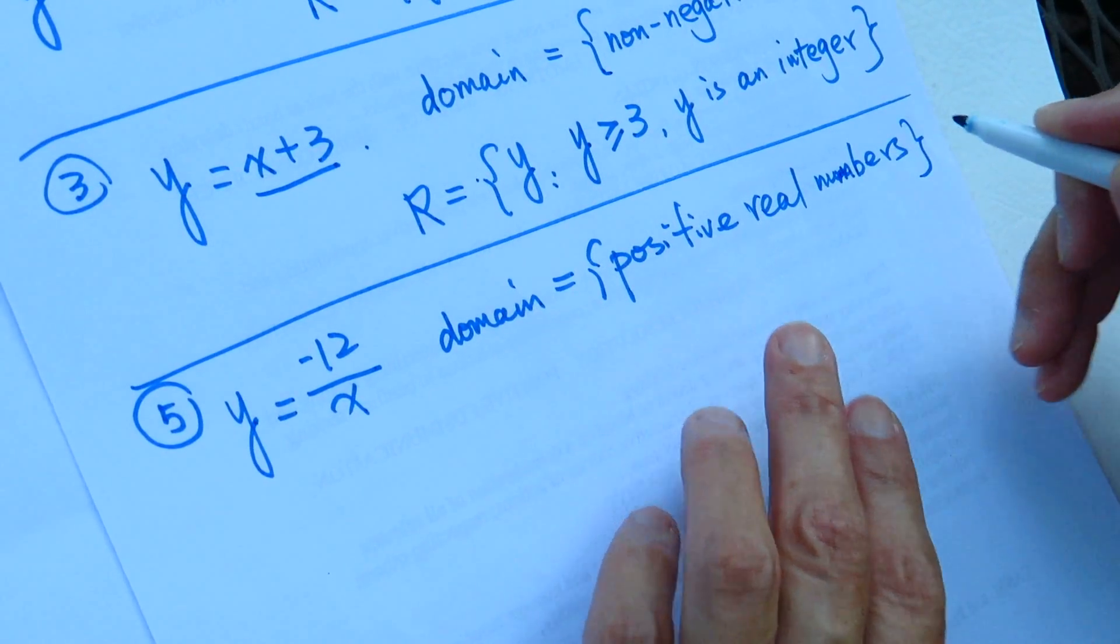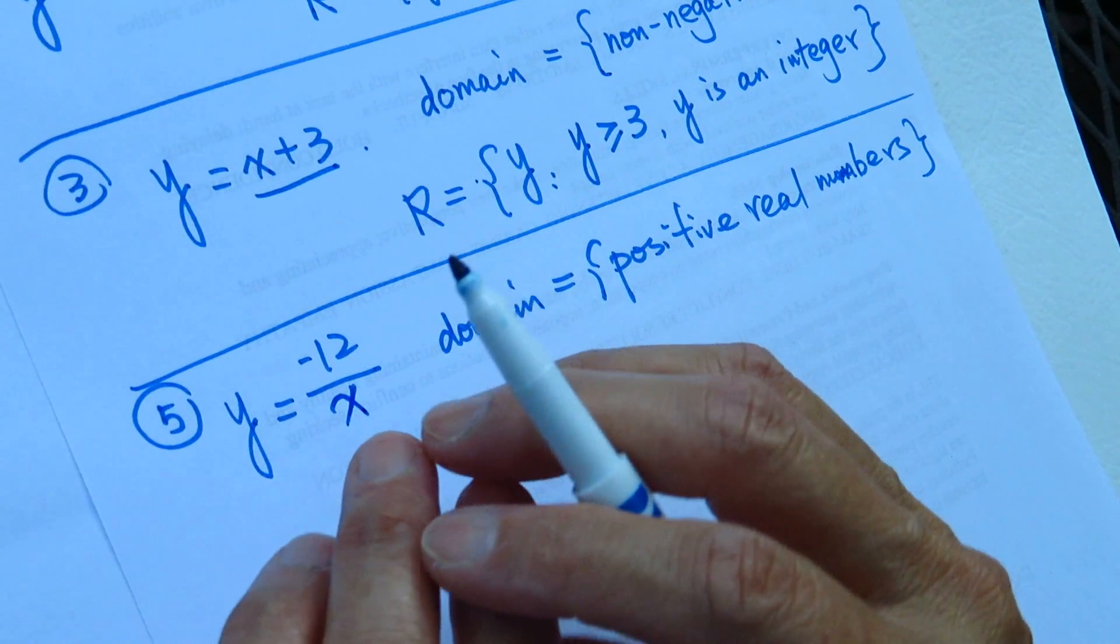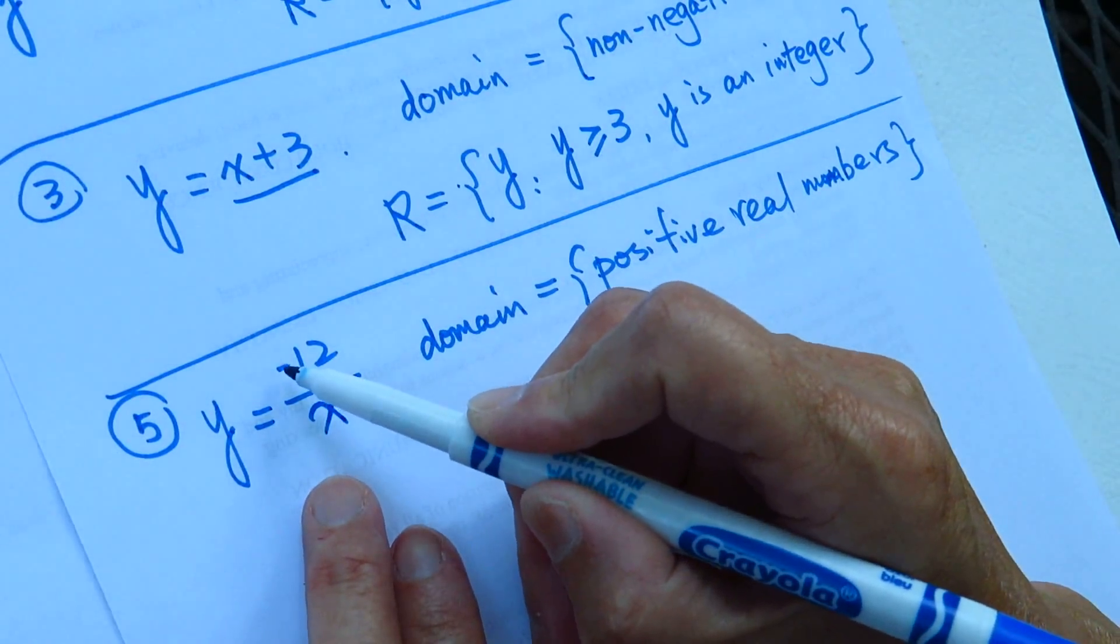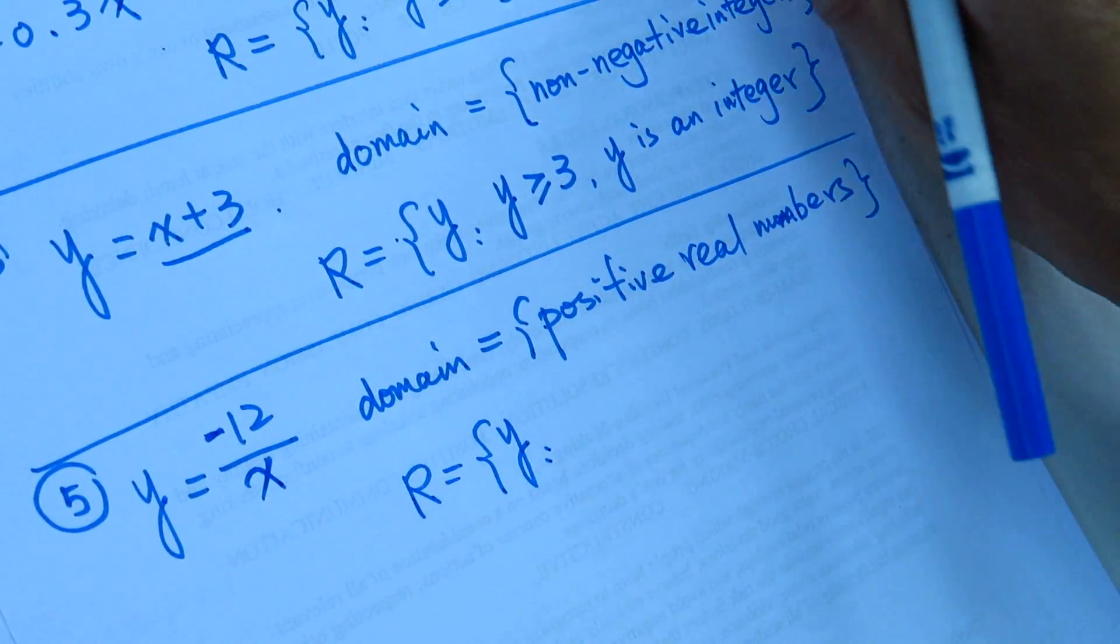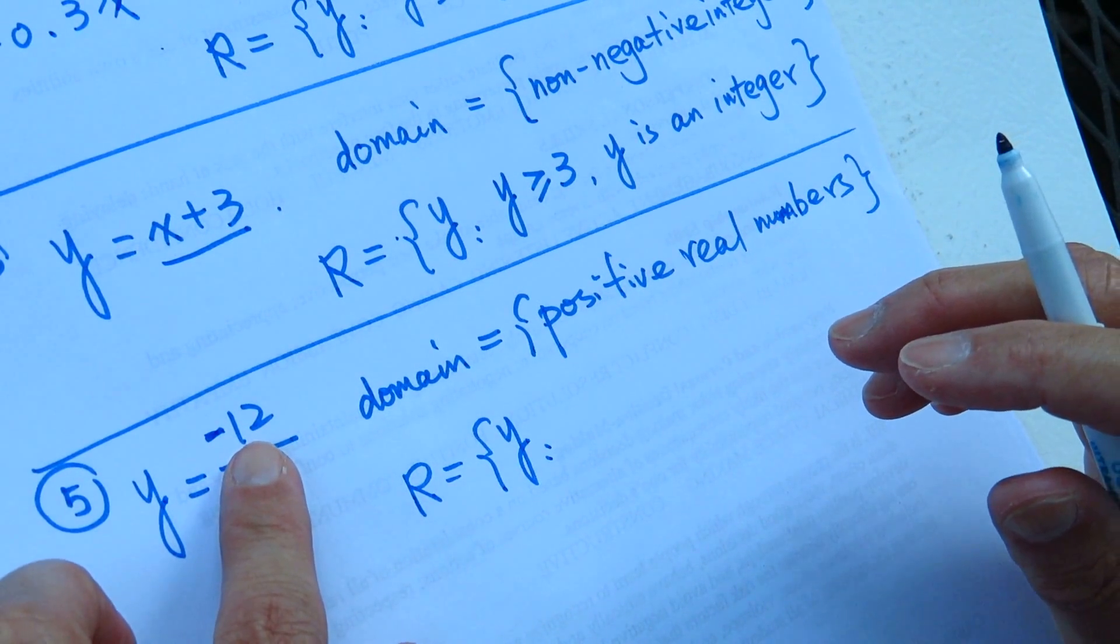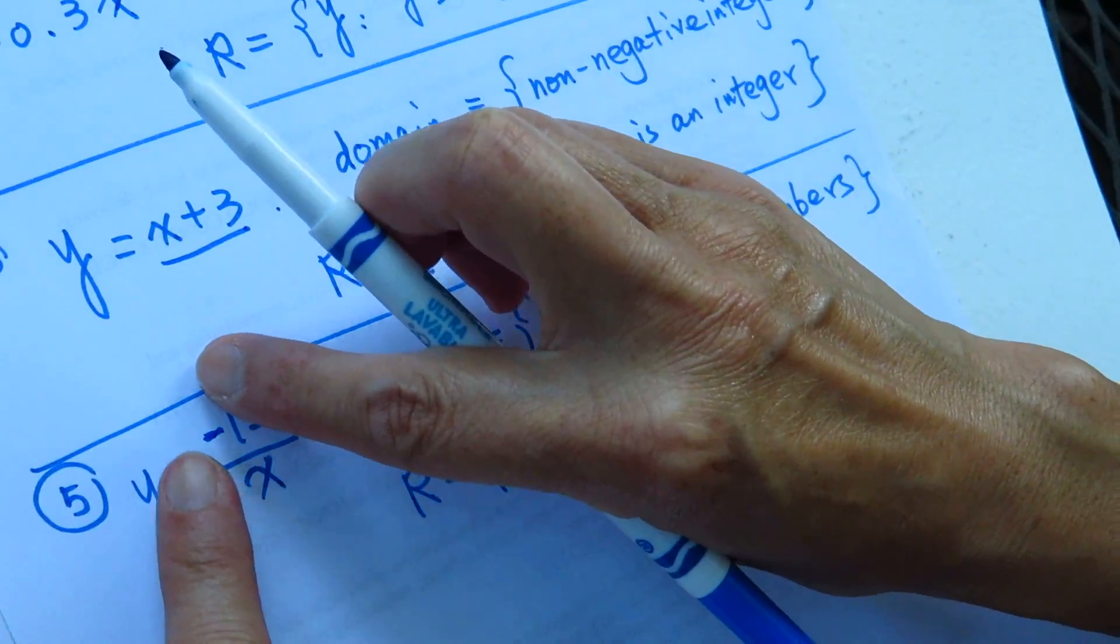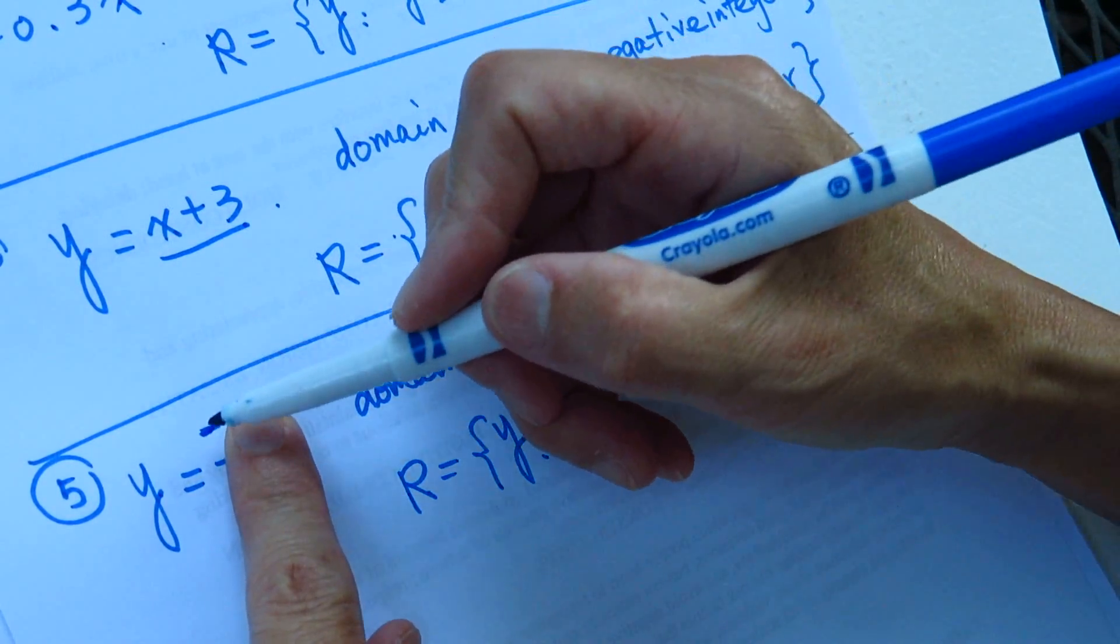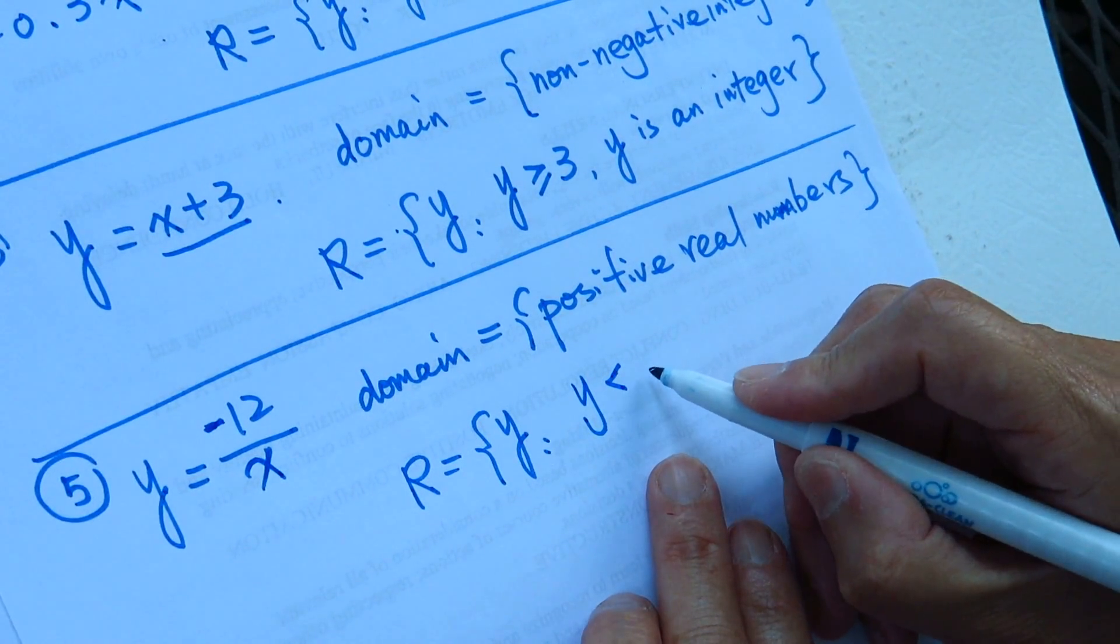Positive real numbers, so this one when X becomes the biggest, the whole number approaches towards zero, right? And here is negative, so the range equal to y, and it will be always negative number because here is negative and X is a positive real number. So everything this part is positive and the opposite of positive is negative, so y will be smaller than zero.